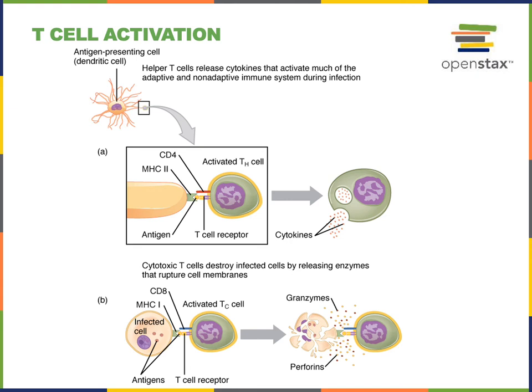This will lead to activation of the cytotoxic T cell, and the activated cytotoxic T cell releases perforins and granzymes. Perforins will create pores in the plasma membrane of the infected cell. Then granzymes enter through these pores, and the granzymes are proteolytic enzymes that will activate the apoptotic cell death mechanism.